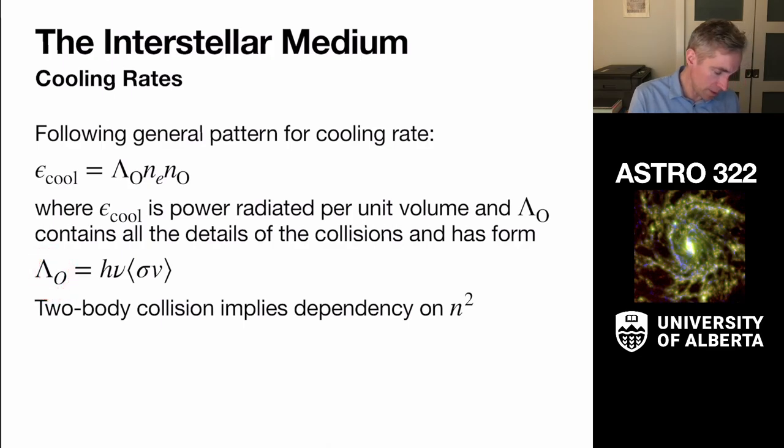Now the general process for this cooling rate, lambda sub o, has a form of the amount of energy carried away times the reaction rate, which is the cross section for this interaction happening in the same sense of like probability of interacting,